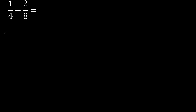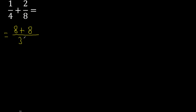First, multiply like this. 8 multiplied by 1 is 8. Plus, 4 multiplied by 2 is 8. Here, 4 multiplied by 8 is 32.